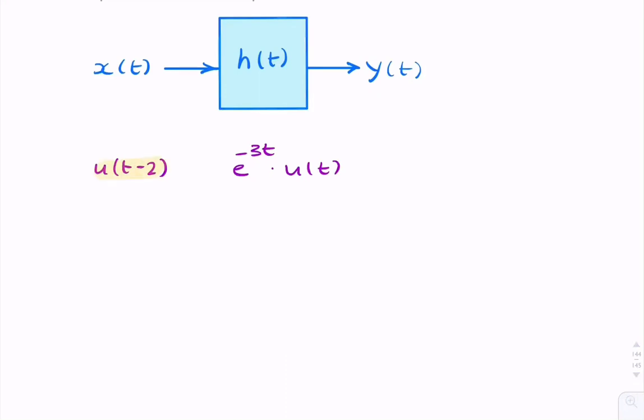Here we have some input to a linear time-variant system with a given impulse response, and we need to find the output. So immediately we would think of carrying out a convolution between the two. So the output would be the input convolved with the impulse response.